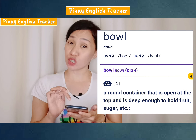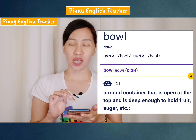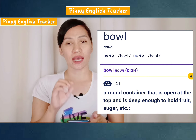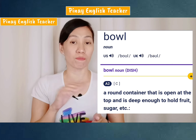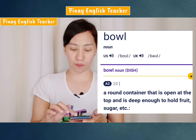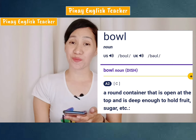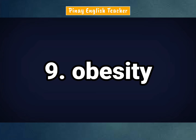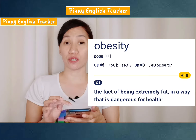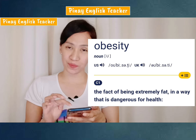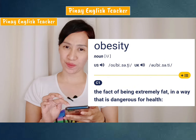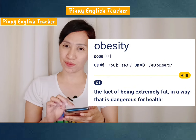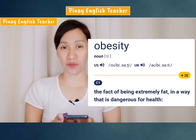In British English, it's bowl. It's 'o'. This is how obesity is pronounced: obesity. Obesity. In British English: obesity. Obesity.